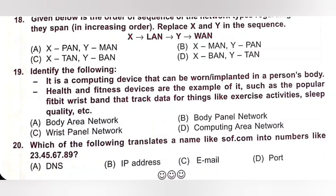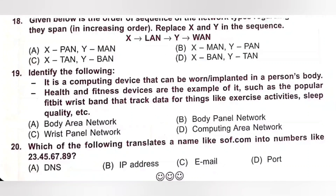Last one — twentieth. Which of the following translates a name like sof.com into numbers like 23.45.67.89? A. DNS, B. IP address, C. Email, D. Port. DNS stands for Domain Name System — an internet service that translates domain names into IP addresses. Option A, DNS, is the correct answer.